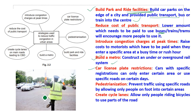Car license plate restrictions - cars with specific registration numbers can only enter certain areas or use specific roads on certain days. Pedestrianization - prevent traffic from using specific roads by allowing only people on foot into certain areas. Create cycle lanes - allow only people riding bicycles to use part of the road. These are methods to control traffic.